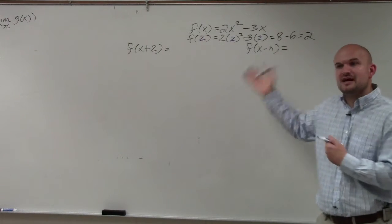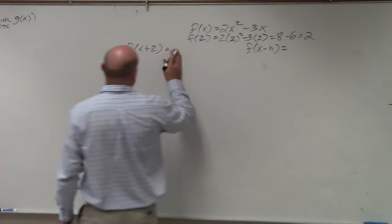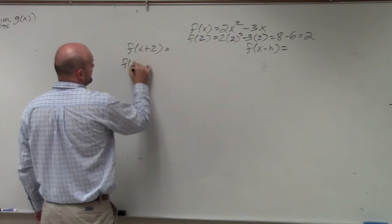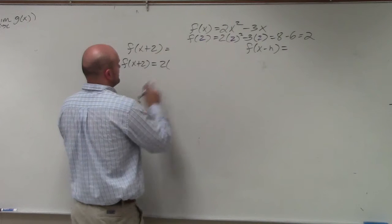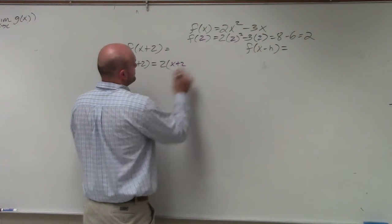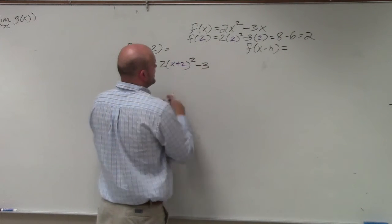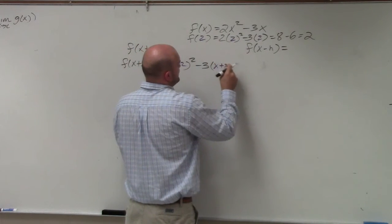Well, ladies and gentlemen, you're just following the exact same steps. You're just doing f of x plus 2, which is just going to be 2 times x plus 2 squared minus 3 times x plus 2.